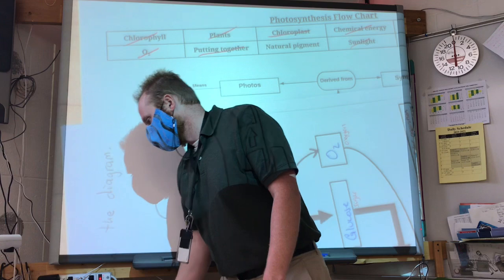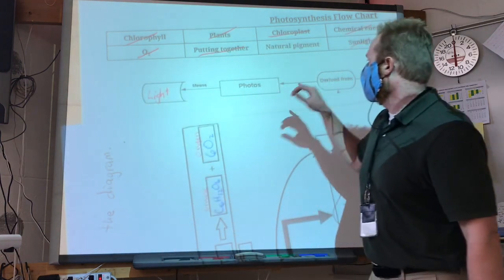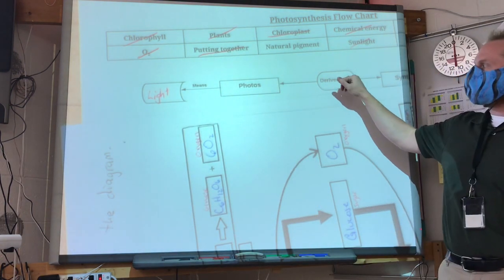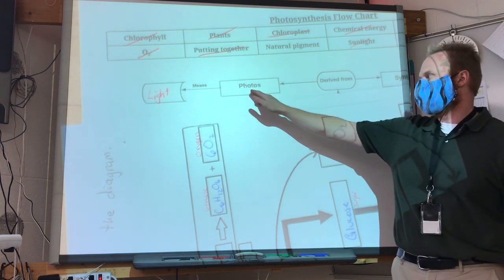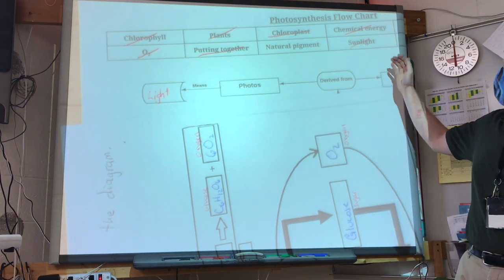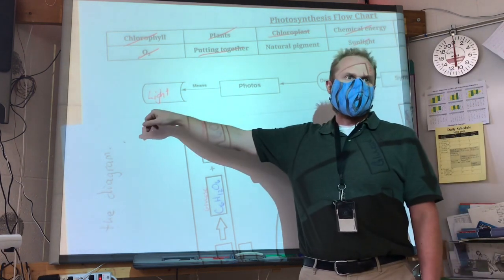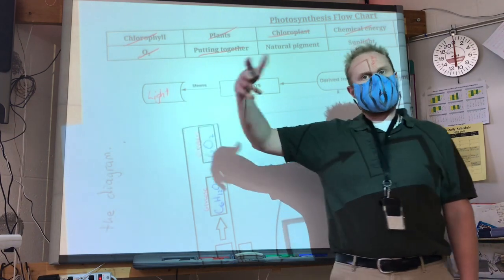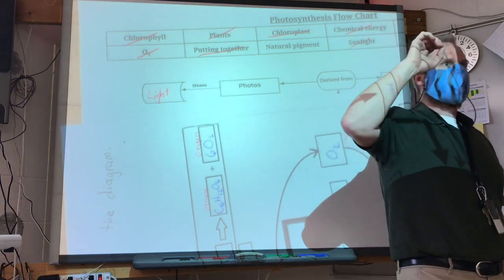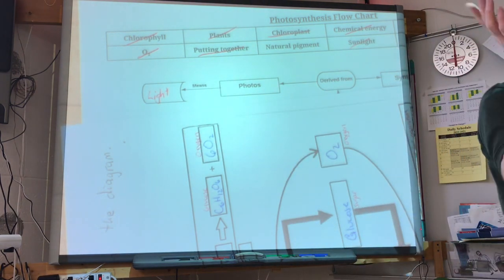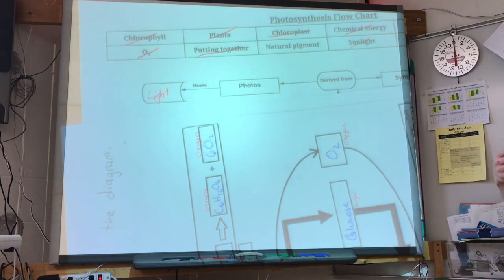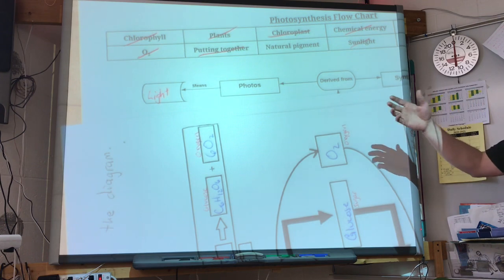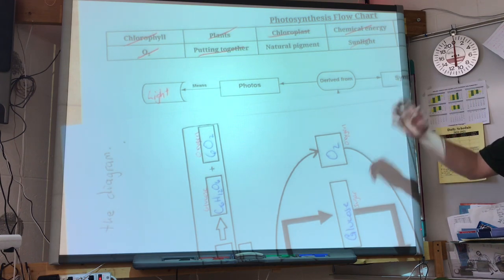When we talk about photosynthesis, if we break the word apart, it's derived from two words: photo and synthesis. The word photo means light. Photographs use light to expose film — once upon a time they exposed film, which could then be processed and we printed pictures. But photo means light.